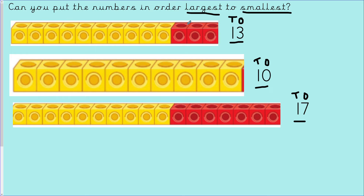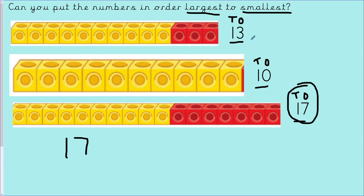We are looking for the largest number. They all have the same amount of tens, so we look at the ones column: we've got 3, 0, and 7. Which is our largest? 7 — therefore 17 is our largest number. I'm putting that first because I'm ordering from largest to smallest. Then comparing 13 and 10, both have the same tens, so we look at ones: 3 and 0. Is 3 bigger? Yes — so 13 is larger than 10. That goes next and we are left with 10 as our smallest number.